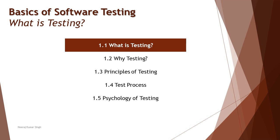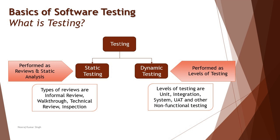Today we are jumping into an area where a lot of people have great confusion: when it comes to types of testing, what is the correct answer? A lot of people say manual and automation, some say white box or black box, others say functional and non-functional. But very rarely do people respond that the answer is static and dynamic. That is what we are clarifying today — the types of testing are static and dynamic.